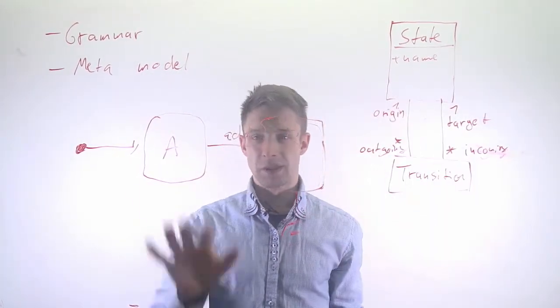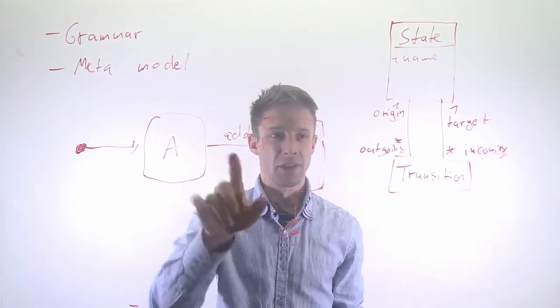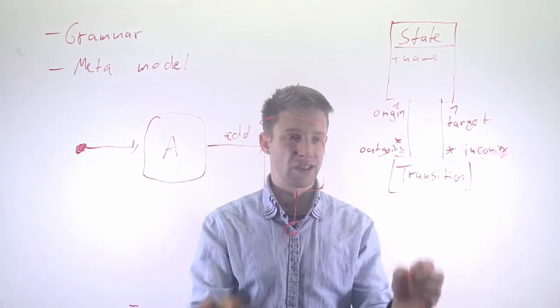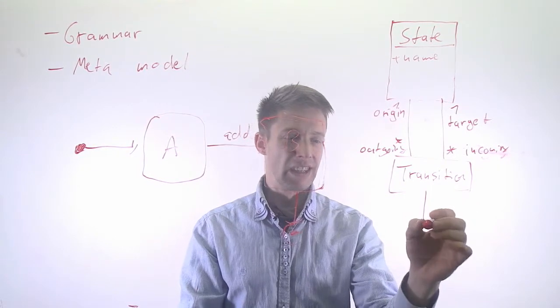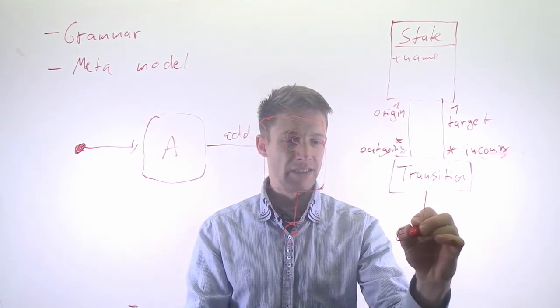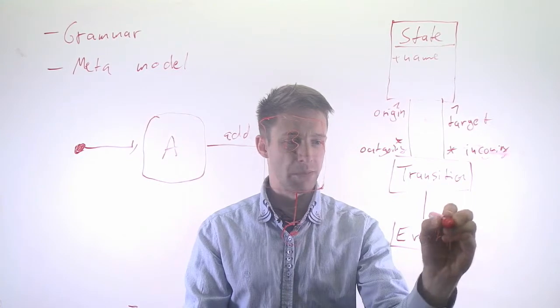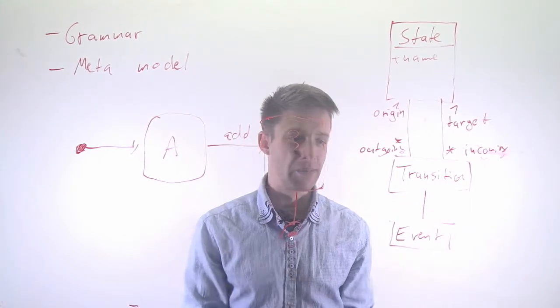So this kind of describes what kind of states we have, and how they're related. Then of course a transition in our case, just to keep it simple, every transition can have an event. Again, we can make this more complicated.